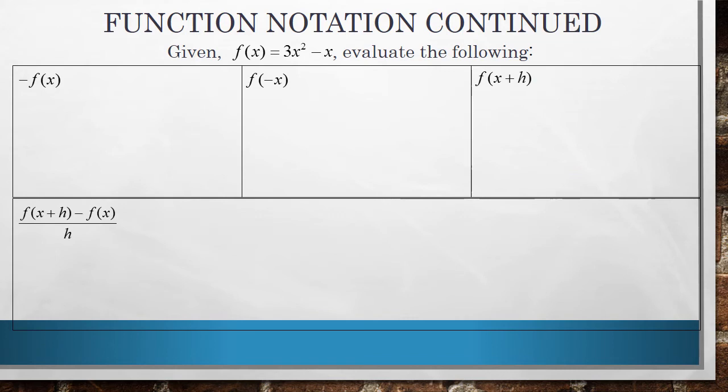Some more examples with function notation. When you see this negative in front of f of x, that's basically saying it's asking for the opposite of f of x. The other way you can look at it is it's the same thing as multiplying f of x by negative 1. When I distribute that through, I get negative 3x squared plus x.